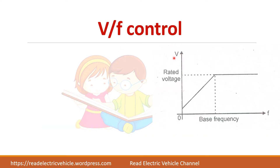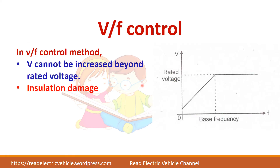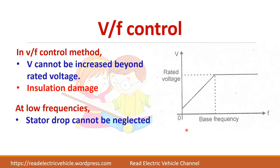Looking at the graph between V and F, the V by F ratio is maintained constant up to the rated or base frequency. Once the base frequency is reached, voltage must be kept constant, because increasing voltage above the rated value would cause insulation damage. So it is necessary to stop increasing voltage and keep it constant after base frequency.